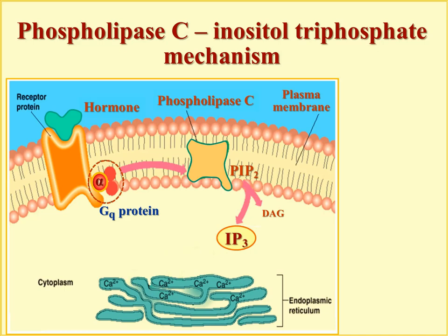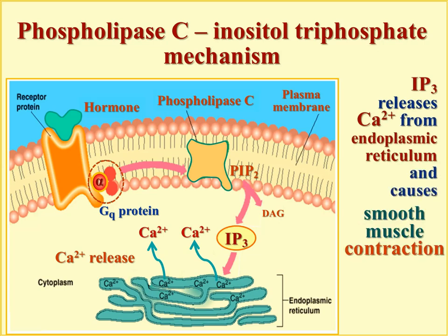The two second messengers are diacylglycerol (DAG), which activates protein kinase C, and inositol triphosphate (IP3), which serves as a ligand for calcium channels in the endoplasmic reticulum. IP3 opens these channels and calcium is released into the cytoplasm. This calcium release, when achieved in a smooth muscle cell, initiates muscle contraction; if it is an endocrine cell, it starts exocytosis or hormone release. So this pathway is mostly used for smooth muscle contraction and endocrine cell secretion.